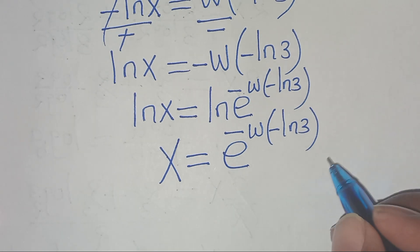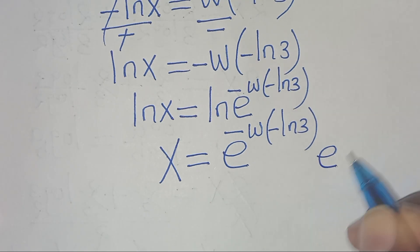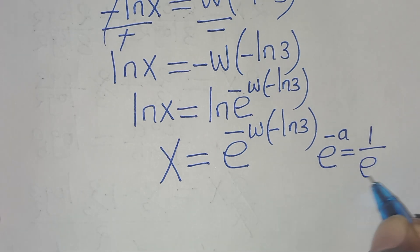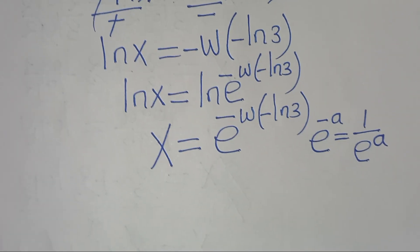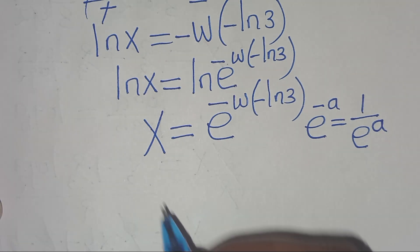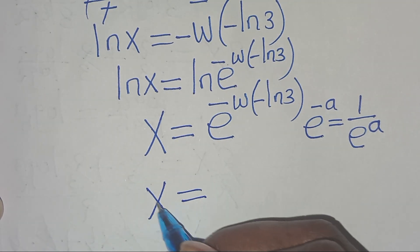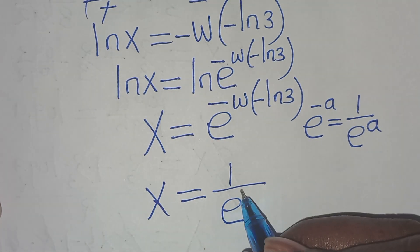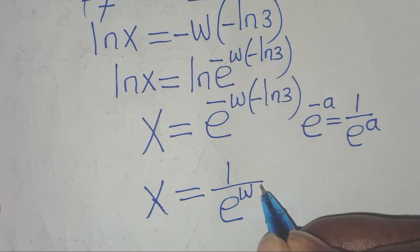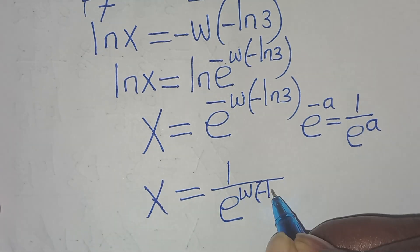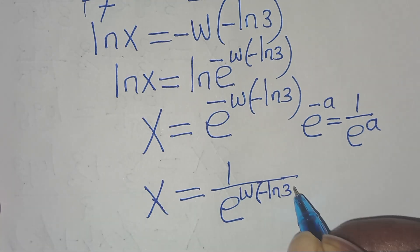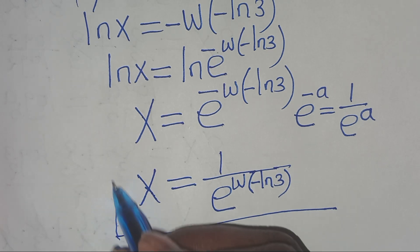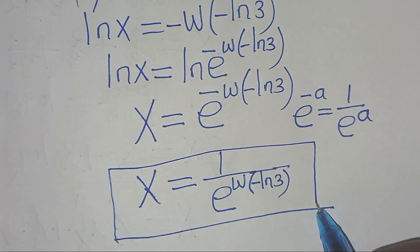And from here, we find that we can express x as x equals e to the power of minus W of minus ln(3). Given that e to the power of minus a can be expressed as 1 over e to the power of a, applying this property, x equals 1 over e to the power of W of minus ln(3). And this is the value of x for this algebra problem.